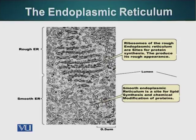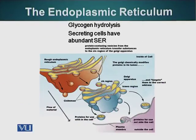Smooth endoplasmic reticulum also performs some chemistry and protein modifications. For example, the disulfide bridge bonds that we saw in our proteins are also formed in the endoplasmic reticulum. The smooth endoplasmic reticulum is also a site of glycogen hydrolysis and is also the site where lipid synthesis takes place.